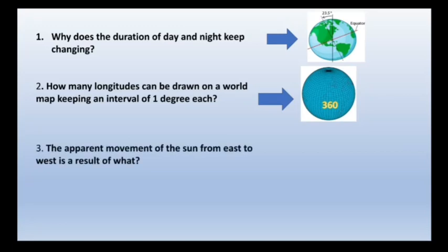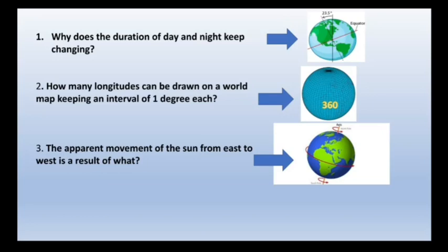The apparent movement of the sun from east to west is a result of rotation. What is the direction of the rotation of the earth? The direction of the rotation of the earth is from west to east.